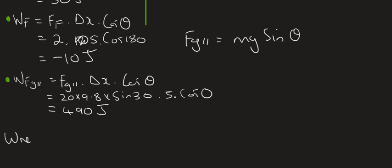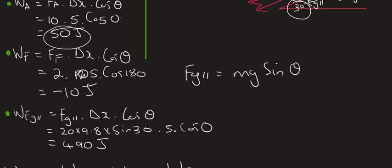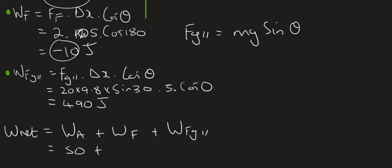Okay so then the net force, I mean the net work, is just going to be equal to WA plus WF plus WFg parallel. You're just adding them all together. And so WA was 50 joules. WF is minus 10. So you'll say plus minus 10. And then 490 is your parallel. If you add all of that together you end up with 530 joules. And so the overall effect is that this object will speed up. So 530 joules of energy is being added to this object.